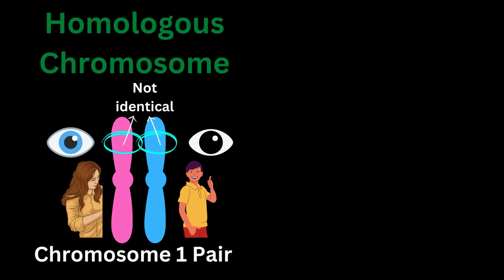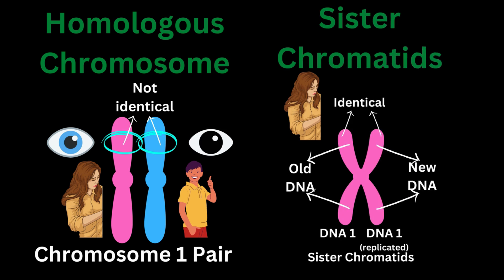Hence, homologous chromosomes are not identical — they are just pairs of chromosomes obtained from our parents which have the recipes for the exact same part of our body. Whereas sister chromatids are identical chromosomes. Sister chromatids are formed when the cell is going to divide and has to replicate its DNA. When DNA replication occurs and the two DNAs are genetically identical, we call these DNAs sister chromatids.